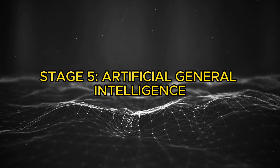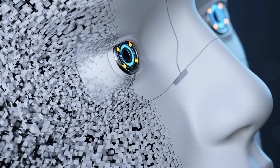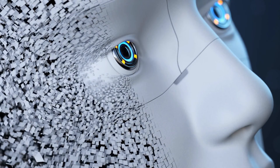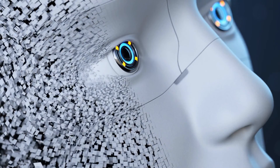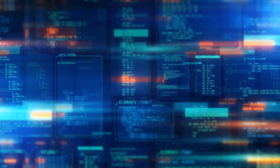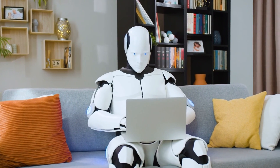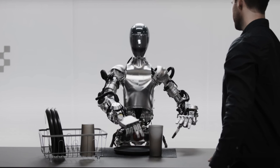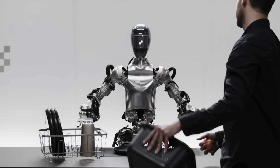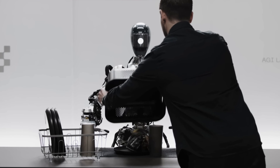Stage 5: Artificial General Intelligence. AGI is often seen as the ultimate goal. AGI can perform any software task that a human can, making it incredibly versatile. It can be taught almost anything, similar to teaching an adult human, but it can learn thousands or even millions of times faster.